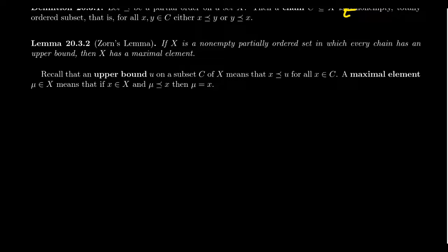We're going to proceed in this lecture series accepting Zorn's Lemma as our version of the axiom of choice, and therefore we have to accept all of the conditions that come with it — kind of like being a genie in Disney's Aladdin franchise: you can't have all that omnipotent power without accepting the rules that come with it. So now let's say: what is Zorn's Lemma?